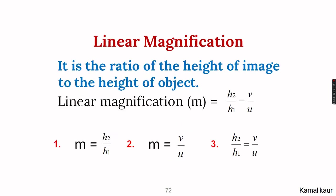Another formula we will use is linear magnification, which tells us the size of the image compared to the size of the object. It can be found by calculating the ratio of height of image to height of object. So m = h2/h1, and it is also equal to v/u. This formula can be used in three different ways: m = h2/h1 = v/u, and since these are all equal to m, they are equal to one another as well.